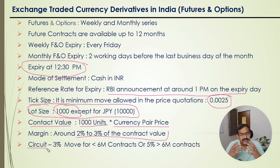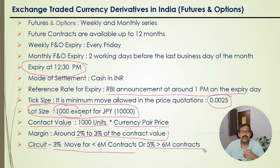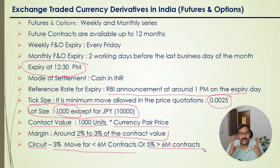Coming to circuits — normally it is expected that currencies are traded within a band of plus or minus 2%. If it goes beyond 3% for contracts less than 6 months, or 5% for contracts more than 6 months, there will be a circuit. Normally this situation doesn't happen unlike in the equity market — you won't see big gap-ups or gap-downs of 2% or 3% in the currency market.